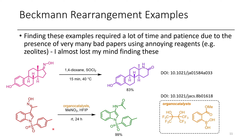In this next example, we have an N-sulfonyl indole ketoxime. They also have just an NH indole in this paper, but I've included this one because it shows that additional functional groups are tolerated. The neat thing here is they use just 5% catalyst loading of this perfluoropinacol as well as a boronic acid, which helps this rearrangement occur at room temperature in a very short amount of time. This is probably my favorite set of conditions for the Beckmann rearrangement — extremely mild. I'm quite a fan of hexafluoroisopropanol as a solvent, and this organic catalyst definitely tickles my fancy.